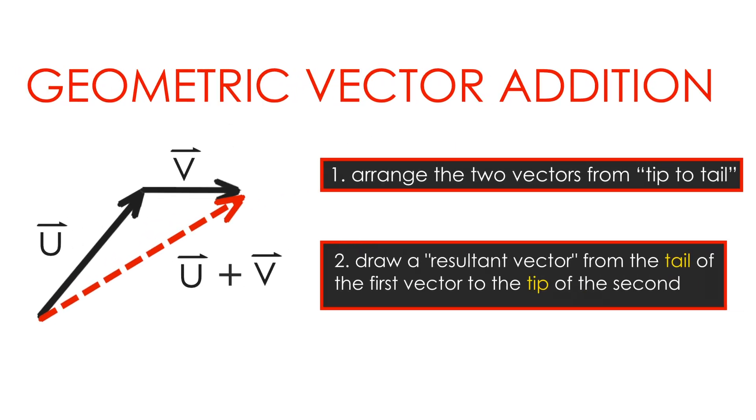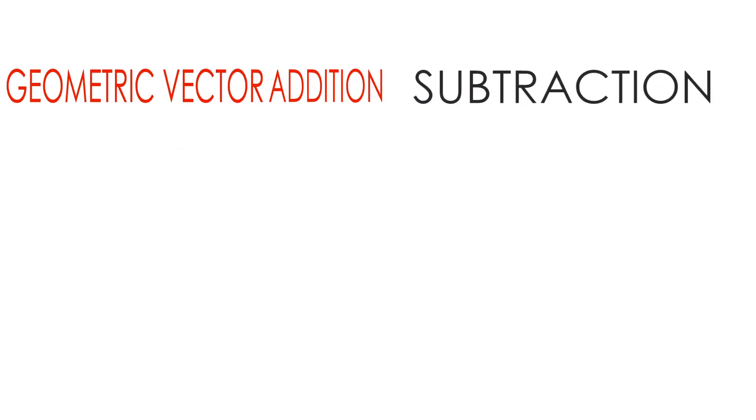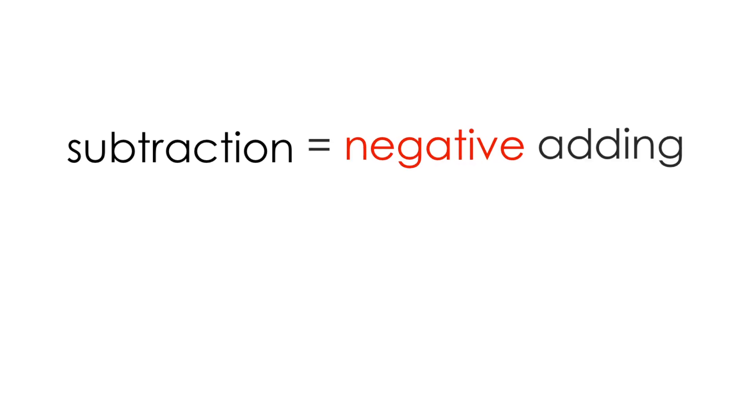So that's adding two vectors geometrically. But what about subtraction? Intuitively, you probably know that subtraction is really just adding a negative number. 3 minus 2? That's really just 3 plus negative 2.